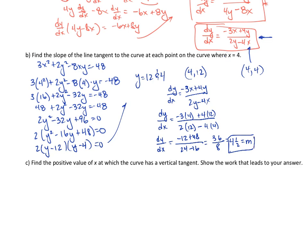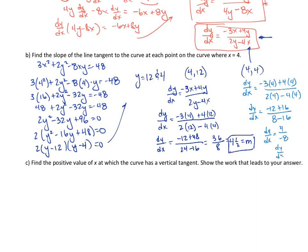Now, let's do the other one. This will be negative 3 times 4 plus 4 times 4, all over 2 times 4 minus 4 times 4. So, dy/dx on the other slope would be negative 12 plus 16 over 8 minus 16, which is 4 over negative 8, giving dy/dx equals negative 1/2. And there are your two slopes. So, that's the first slope, and there's the second slope. It says find the slope of the tangent of the curve — at each point we had two points, and we found each slope.